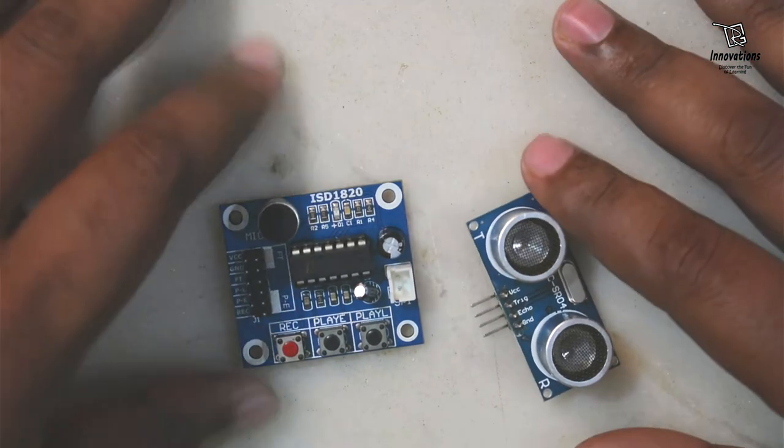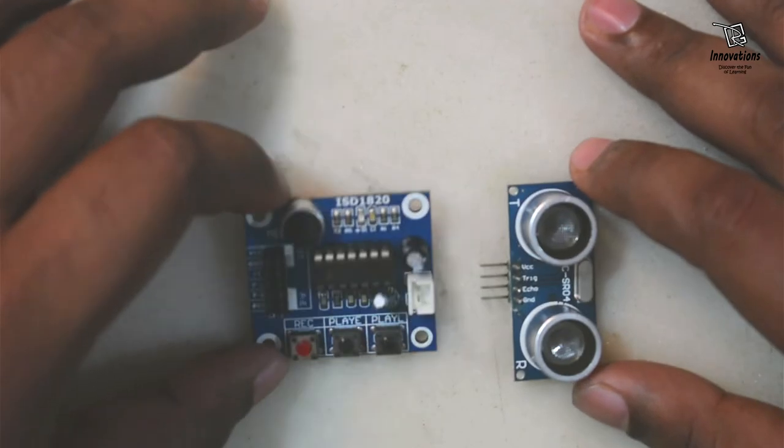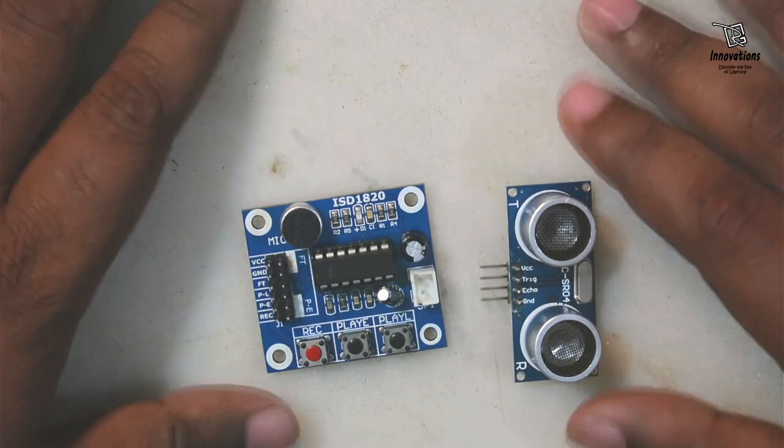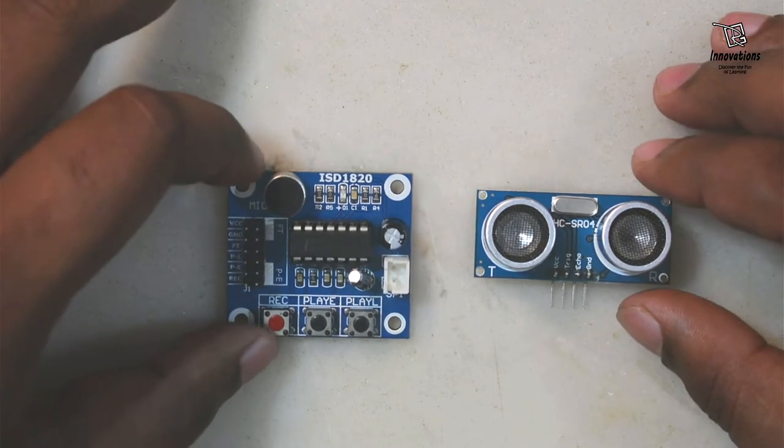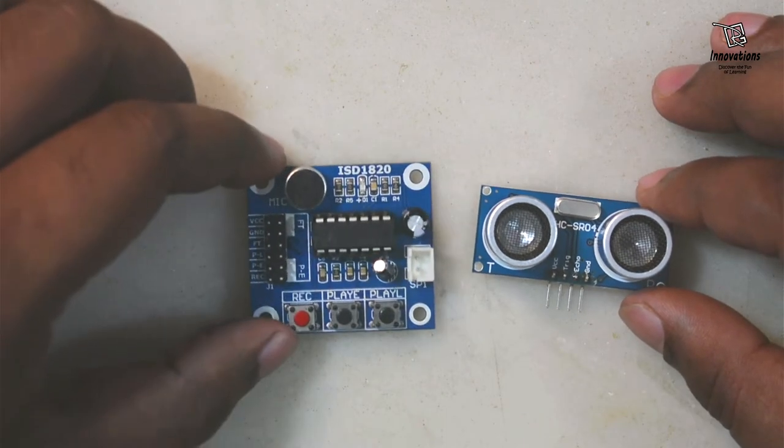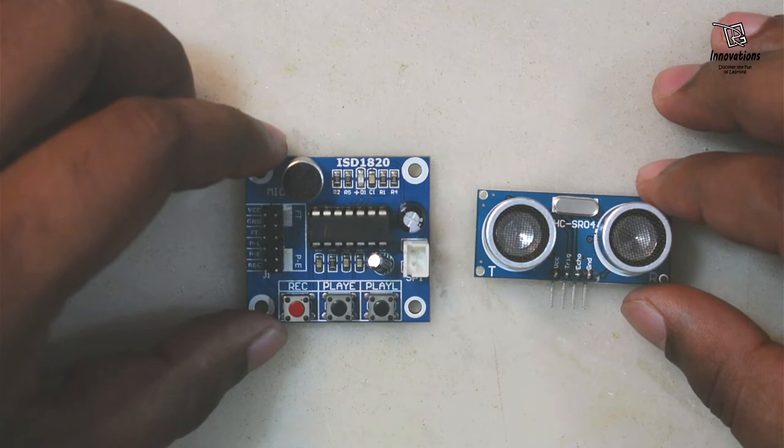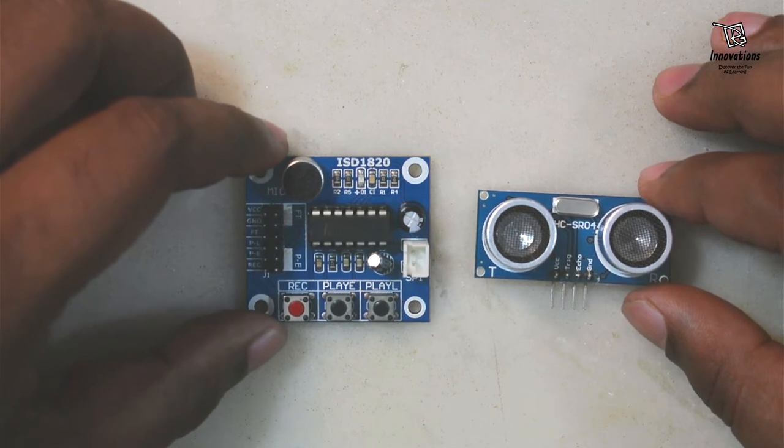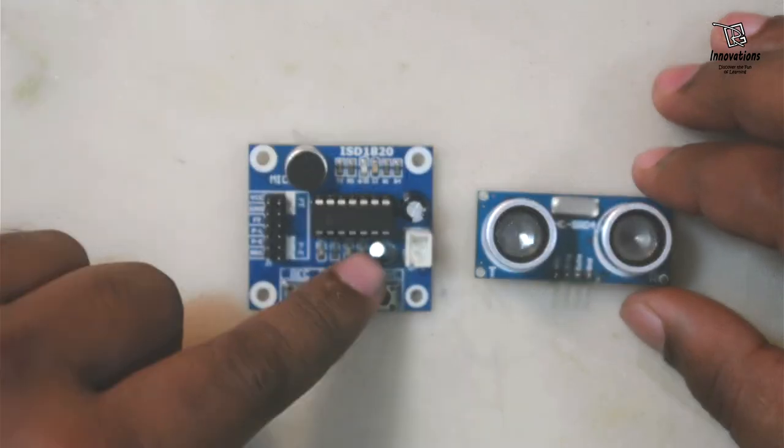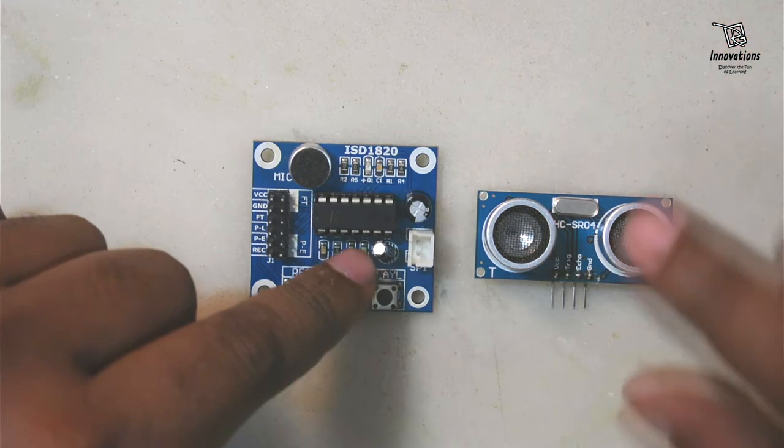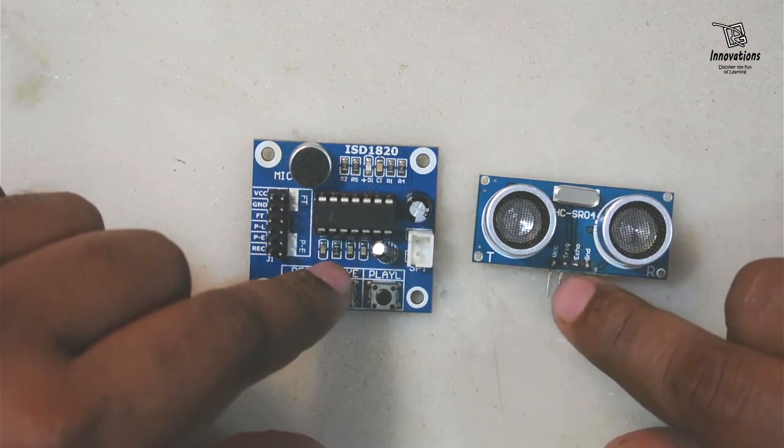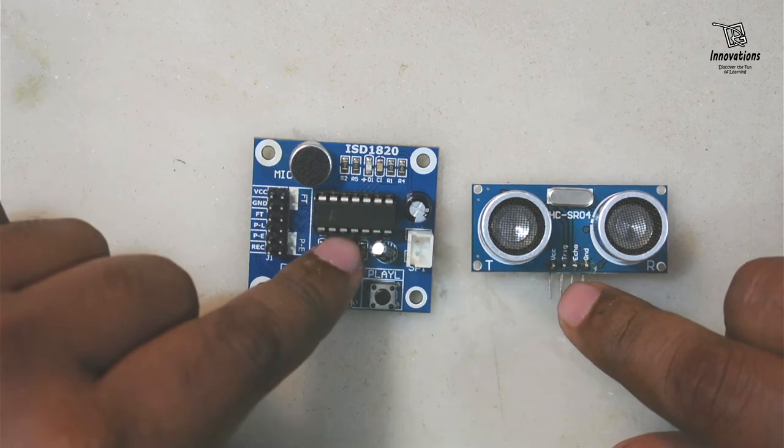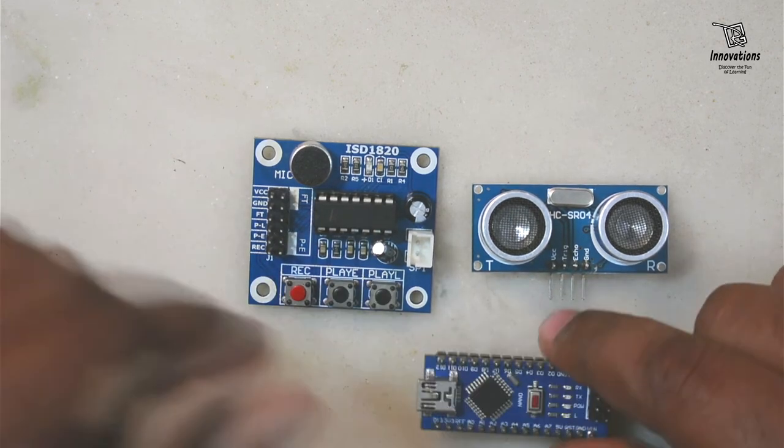In this kind of project, we can use these two modules where we need a voice alarm or voice alert with distance sensing. This ultrasonic sensor module cannot be directly used with this ISD1820 module as I have shown in my previous project with a PIR sensor. So for that, we need an Arduino.